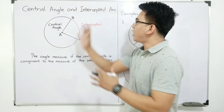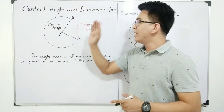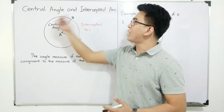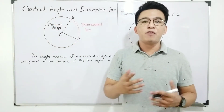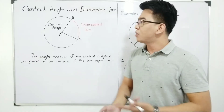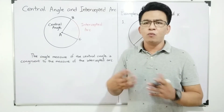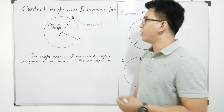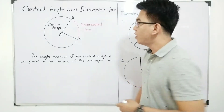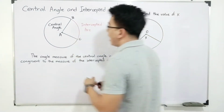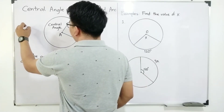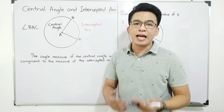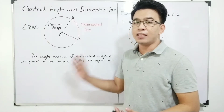So we have here an illustration of a circle, and this is circle A. What we are discussing right now is all about the relationship between the central angle and the intercepted arc. But before we start with the relationships, we will go with the central angle first. What is a central angle? A central angle is an angle wherein the vertex is at the center of the circle. As you can see, we have here angle BAC, which is considered as the central angle in circle A.